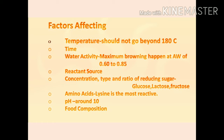Time is also important. Next is time and water activity. Maximum browning happens at a water activity of 0.60 to 0.85. Reactant resources are also very important, as well as the concentration, type, and ratio of reducing sugar. Glucose, lactose, and fructose give maximum browning. For amino acids, lysine is the most reactive as far as browning is concerned.